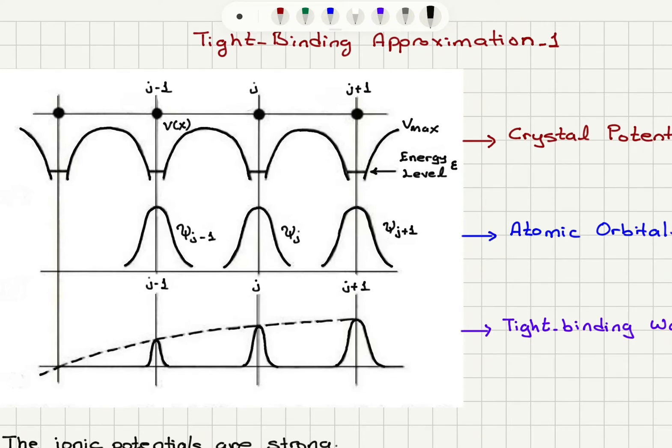So we see that the electronic wave function is centered around the ion and it decays quite rapidly as we go away from the ion.